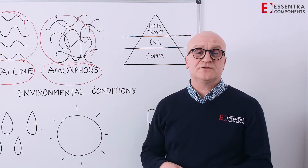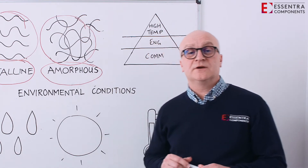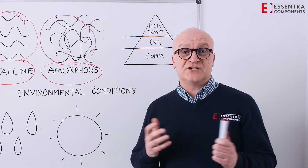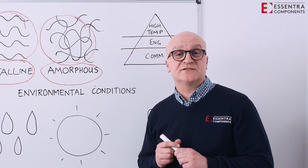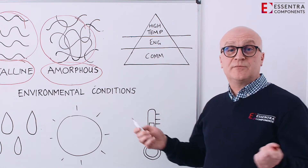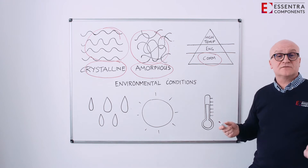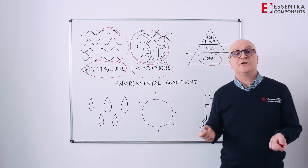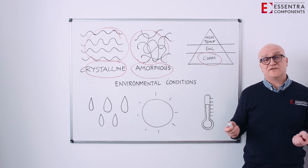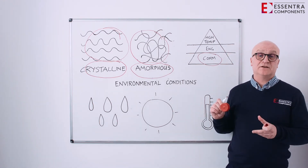This is extremely important to design engineers when selecting the correct material for the application they're designing the part for. Generally, the majority of injection molding polymers are categorized into three simple categories. The first one being commodity materials — these are the most common, widely used and available materials, used for things like our low-density polyethylene cap.